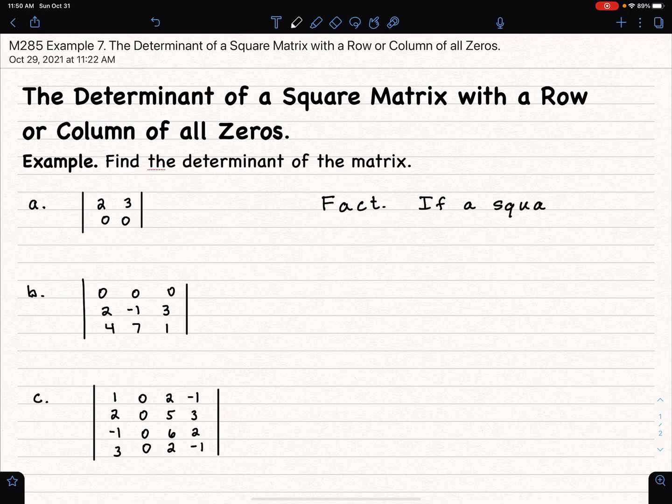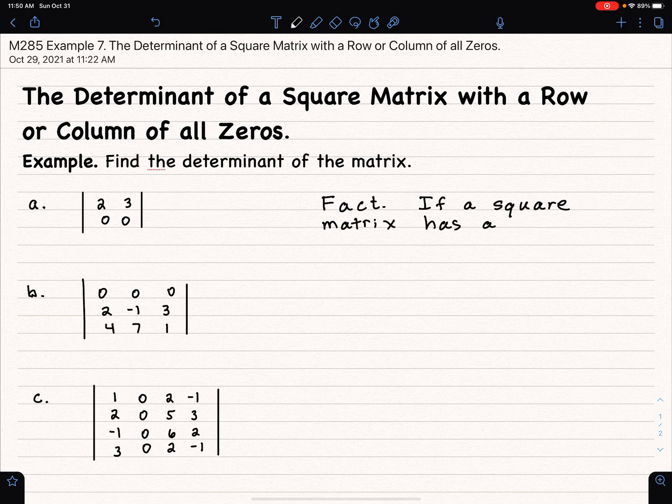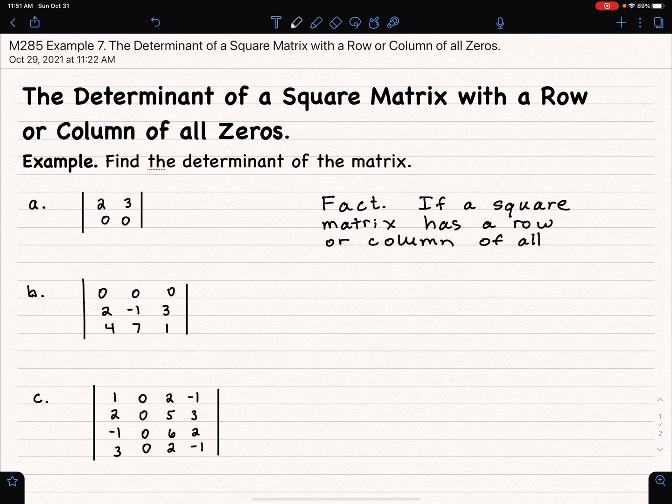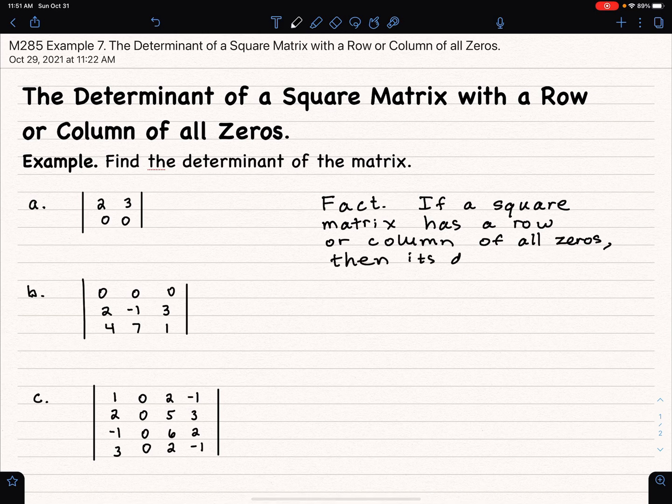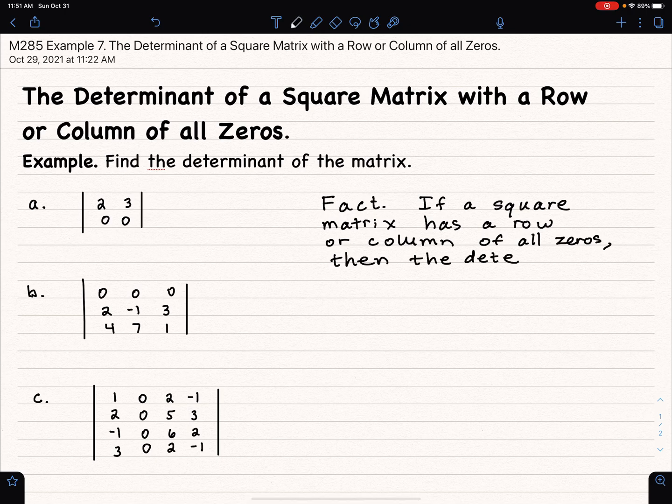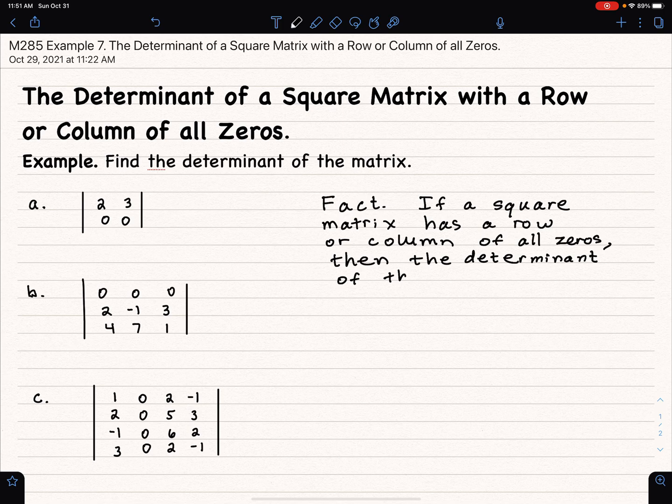square matrix has a row or column of all zeros, then its determinant is equal to zero. I'll say then the determinant of the matrix is equal to zero.